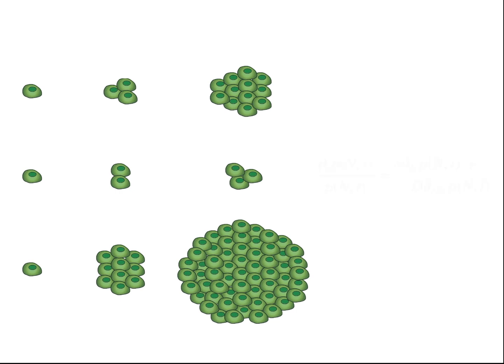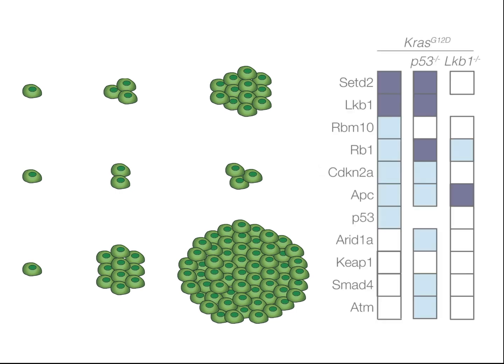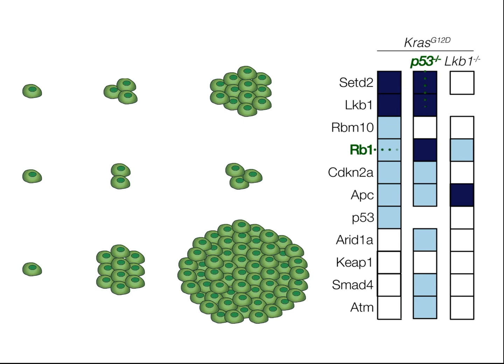Second, we found that a mutation's growth effects depend critically on co-occurring mutations. This phenomenon, known as epistasis, makes it difficult to infer the evolutionary forces acting on complex tumor genomes, like lung cancer, from genomic sequencing alone.